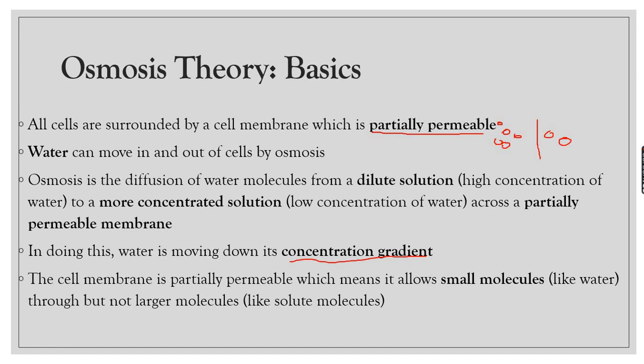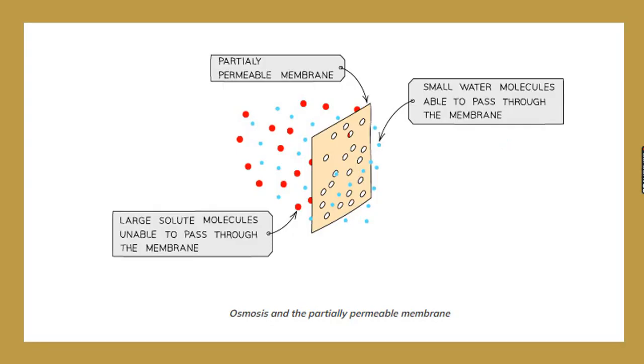The cell membrane is partially permeable, which means it allows small molecules like water to pass through but not larger molecules like solute molecules. We'll be learning further about the functions of each type of cell content, but let's first clear our understanding of this chapter.